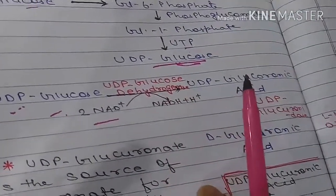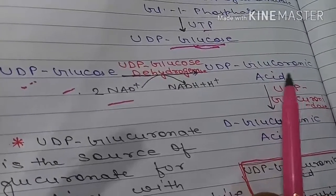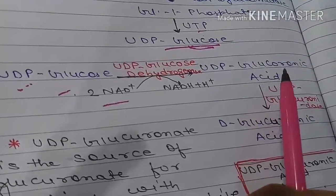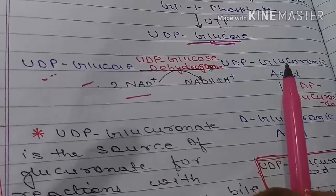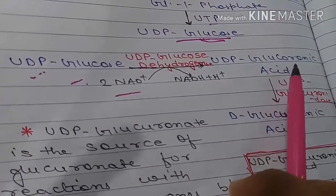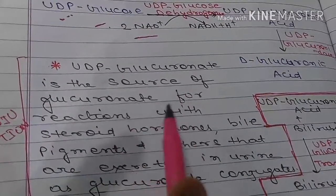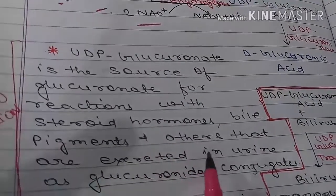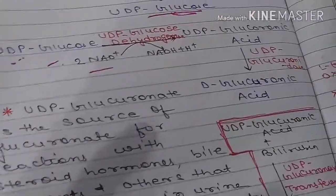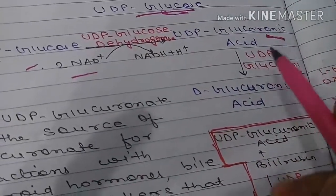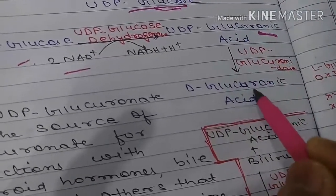UDP-glucuronic acid is a significant product. It is a source of glucuronate for reactions with steroid hormones, bile pigments, and other substances that are excreted in urine as glucuronate conjugates. In conjugation reactions, UDP-glucuronic acid acts as a substrate, and the enzyme UDP-glucuronosyltransferase converts it, releasing glucuronic acid.